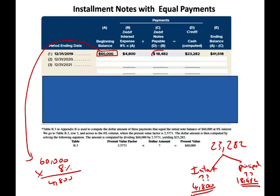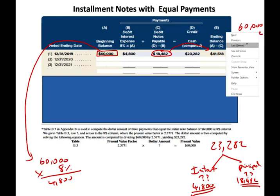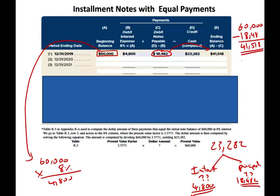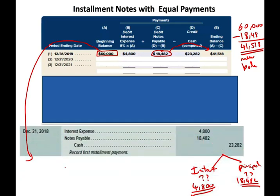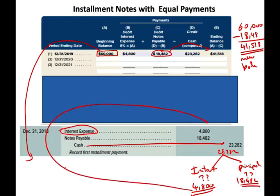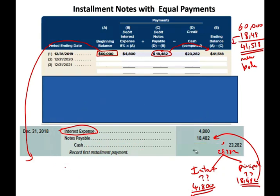As you pay the principal, it reduces the loan balance. The loan was $60,000, and after the principal payment of $18,482 the new balance is $41,518. The journal entry for the first payment: credit cash $23,282, debit interest expense $4,800, and debit notes payable $18,482 to reduce the principal. This is one of three payments.